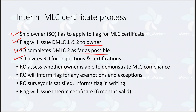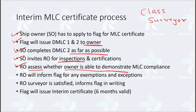The ship owner then invites the RO for a survey. The RO — a class surveyor — is authorized by the flag to perform inspections. The class surveyor assesses whether the owner is able to demonstrate MLC compliance. The RO informs the flag of any exemptions and exceptions. Once the RO is satisfied, he informs the flag in writing and reports to the flag with DMLC Part 2, confirming MLC compliance. On this basis, the flag assesses the documents and issues the interim certificate, valid for six months.